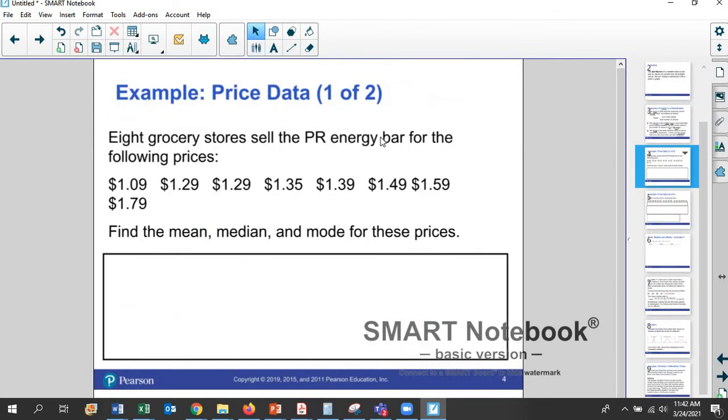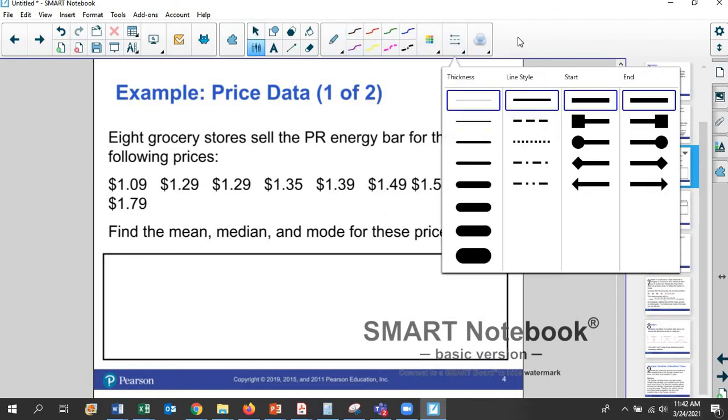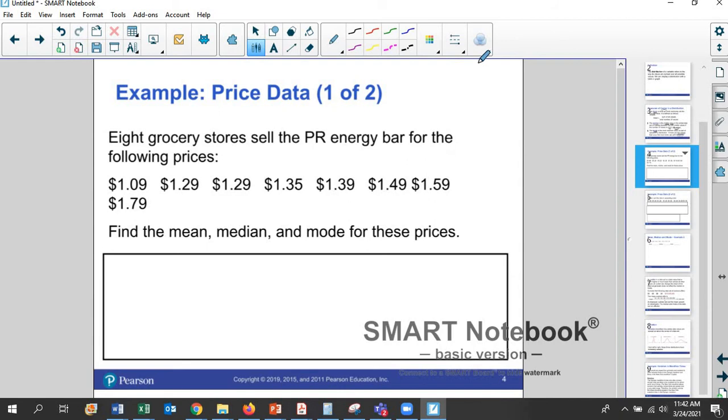So let's do an example. Eight grocery stores sell the PR energy bar for the following prices. We want to find the mean, median, and mode for these prices. So we have eight data points, and we're going to attempt to find the mean and the median and the mode.